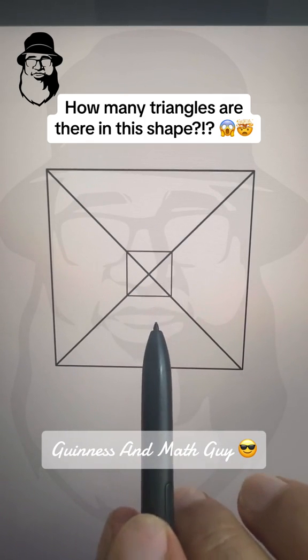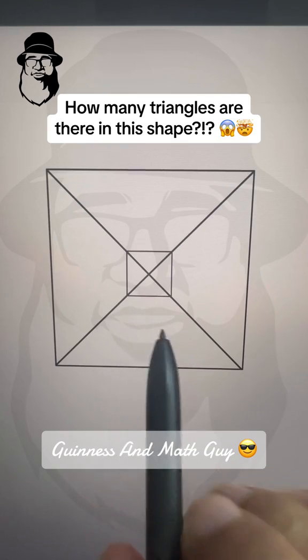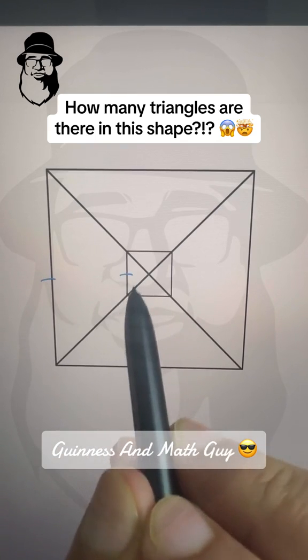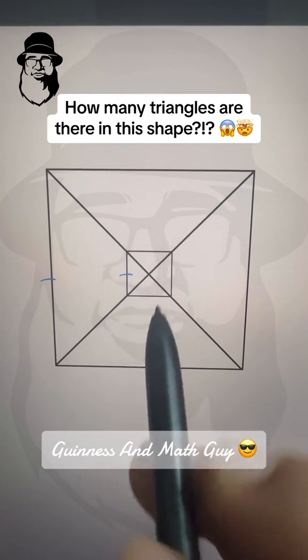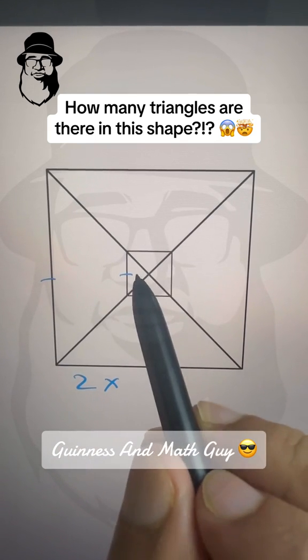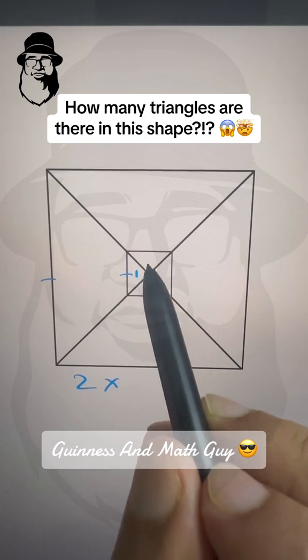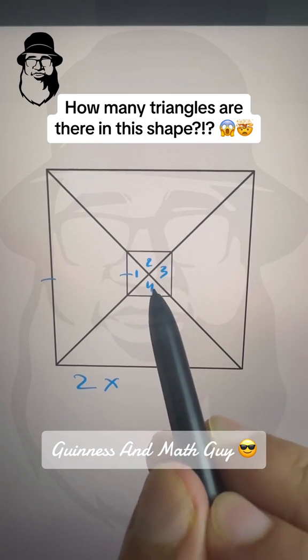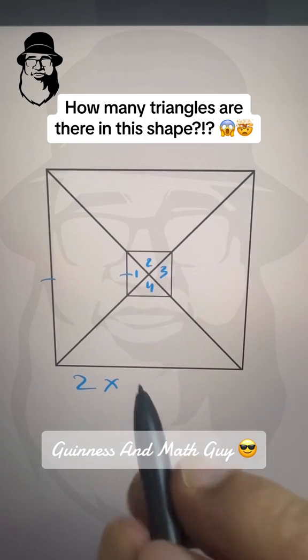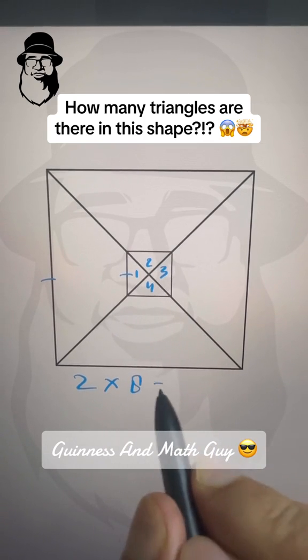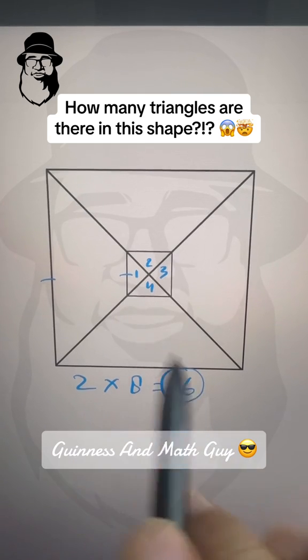Now let's go a little further. Here we have 1 and 2 squares, write 2 here, multiply by, count the triangles inside, 1, 2, 3, 4, and double of 4 is 8. So 2 times 8 is 16 triangles are there in this shape.